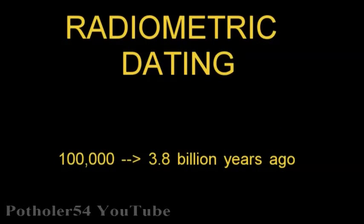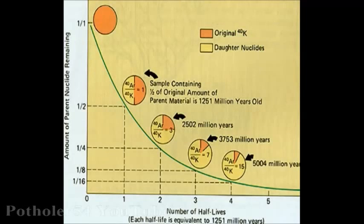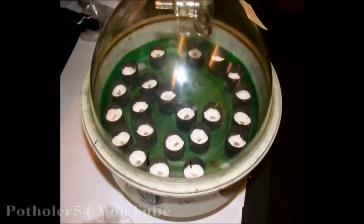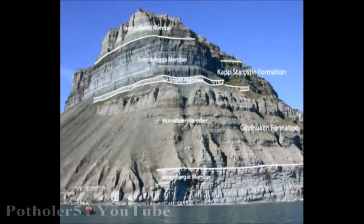Potassium-Argon dating works on the same principle as carbon dating, but instead of carbon decaying to nitrogen, we have potassium decaying to argon. And instead of a half-life of 5,500 years, we have a half-life of 1.3 billion years. That means the method can be used for dating rocks and fossils hundreds of millions of years old.